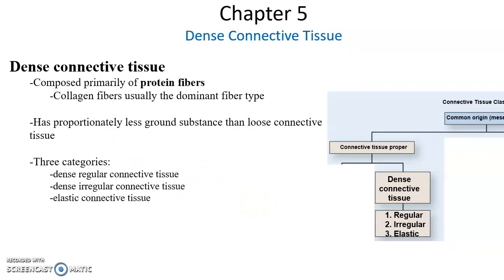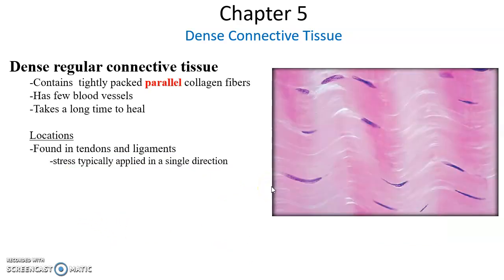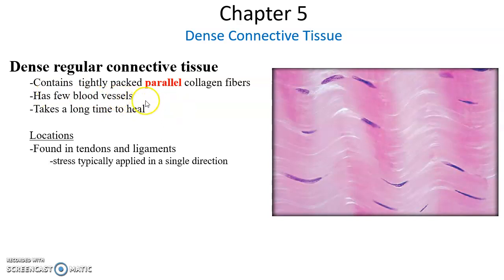Dense connective tissue has lots and lots of protein fibers and very little cells or ground substance. Dense regular connective tissue is made with tons of collagen fibers — all this pinkish, wavy structure — densely packed together, all going in the same direction, so they can resist forces in one direction. They have very few blood vessels, so they take a long time to heal. The dark spots are the nucleuses of fibroblasts that make the collagen fibers. Dense regular connective tissue is found in tendons and ligaments, because they're resisting forces in a specific direction.